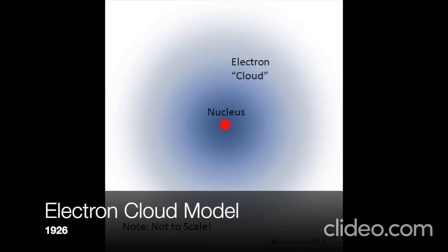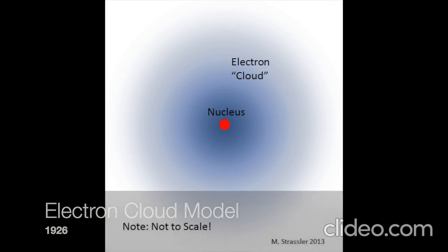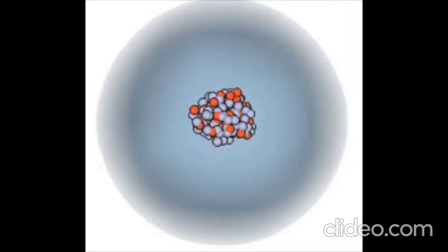The electron cloud model illustrates the likelihood of an electron being in different areas of the electron cloud. The darker portions of the cloud show where an electron is most likely to be found, while lighter areas are less likely to contain an electron.